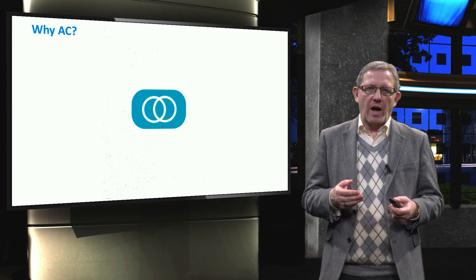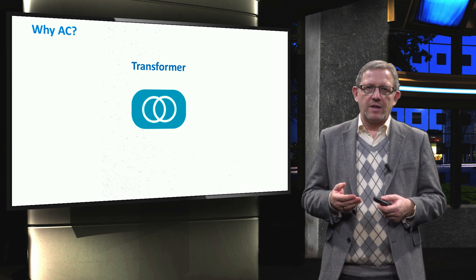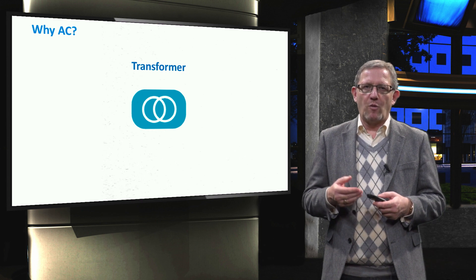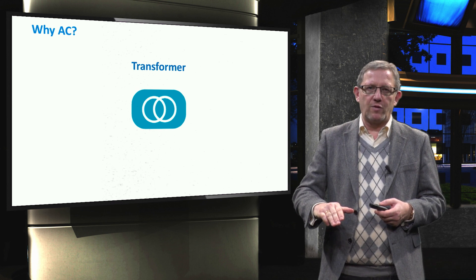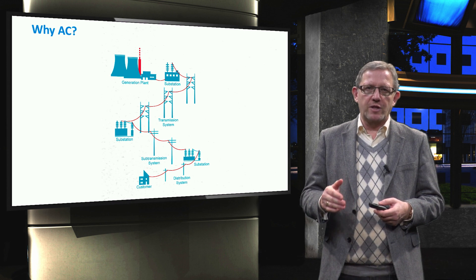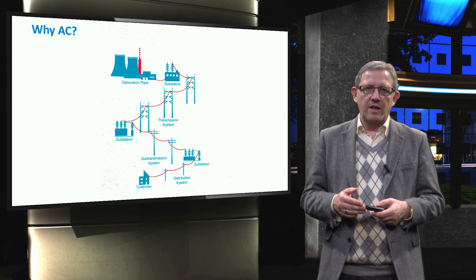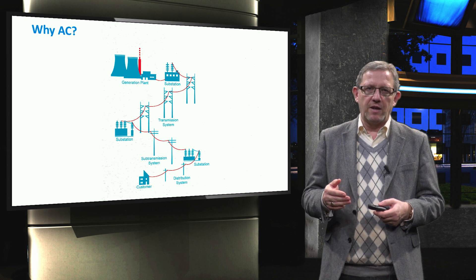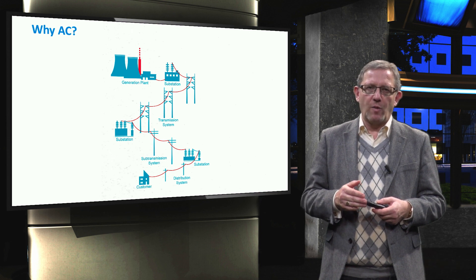Why did AC win the battle? It was because of the existence of the transformer. The AC transformer is a component used to step up or step down the level of the AC voltage. In an existing conventional power system, as reminded from the first week, electricity is typically generated at medium voltage, which cannot be transmitted efficiently at this voltage level due to increased power losses. Remember that losses are R·I².